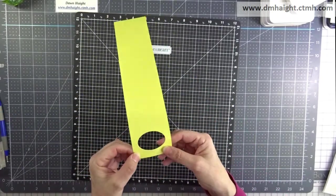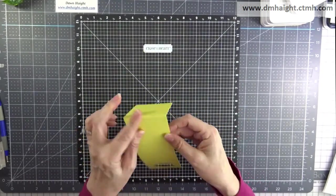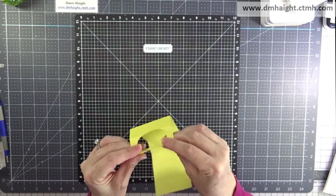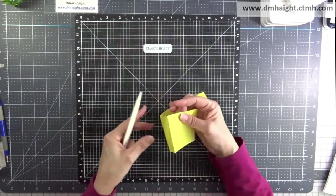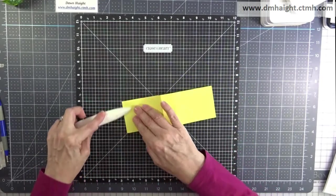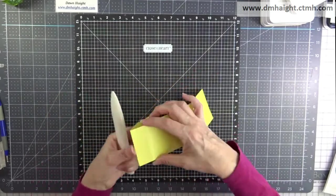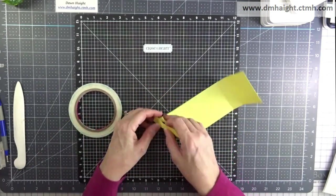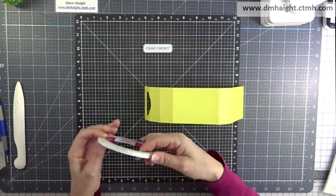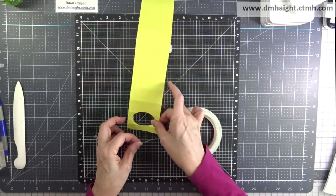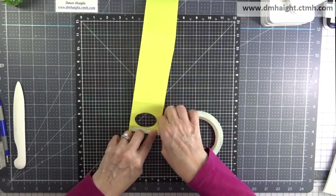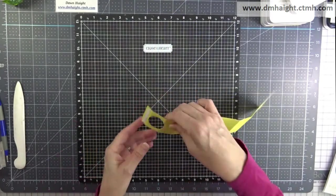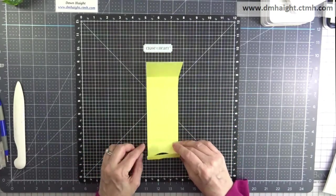I'm going to fold along all of my score lines. See how that oval kind of goes part way through that one fold line. I'm just going to burnish them down with my bone folder to make those folds nice and crisp. Then I'm going to take a piece of score tape and place it along that half inch line.